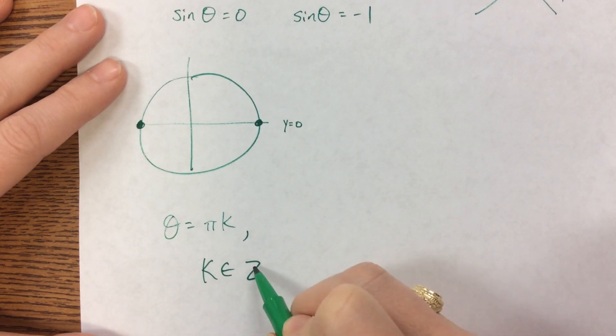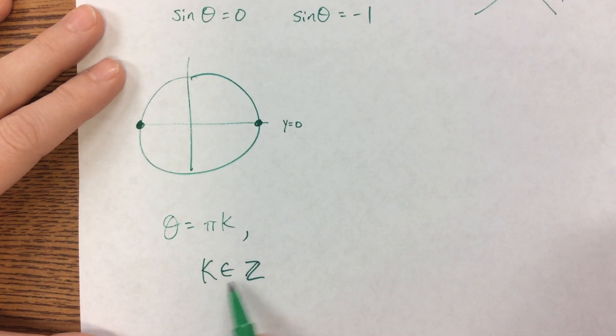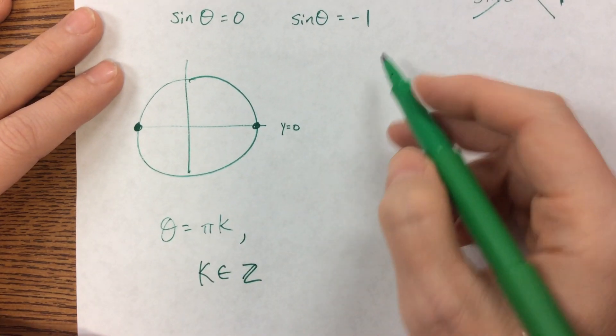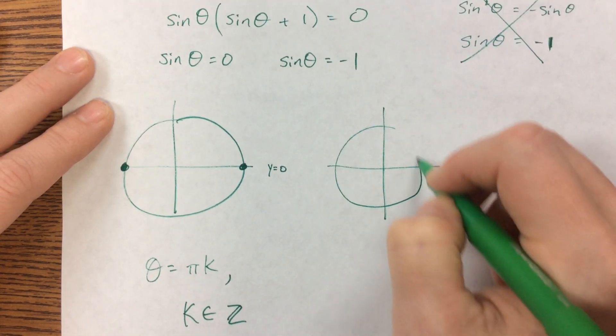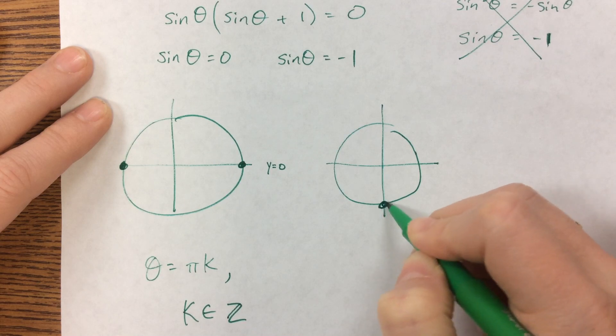Oh, I'm so sorry. So we'll say k is an element of the integers. The other part was that sine had to equal negative one, and that, the y value here, is negative one.